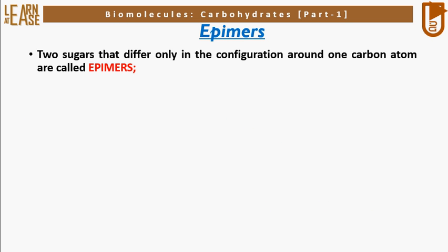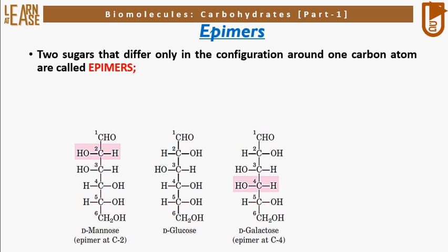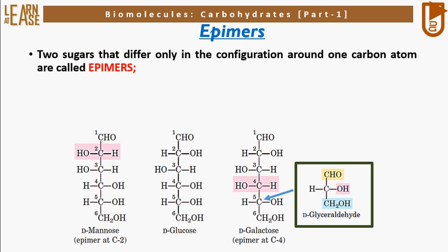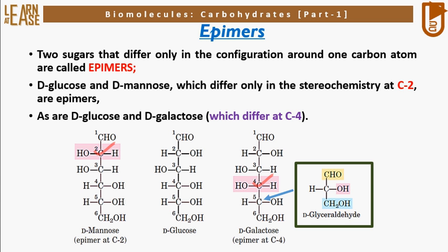Now let me explain epimers. Two sugars that differ only in the configuration around one carbon atom are called epimers. D-glucose and D-mannose, which differ only in the stereochemistry at C2, are epimers. The image shows the structures of D-mannose, D-glucose, and D-galactose. All three are D-isomers as the fifth carbon has an orientation of H and OH groups similar to the chiral carbon of D-glyceraldehyde, where OH is on the right and H on the left. D-mannose is an epimer of D-glucose differing at C2, and D-galactose is an epimer of D-glucose differing at C4, in the orientation of H and OH groups.